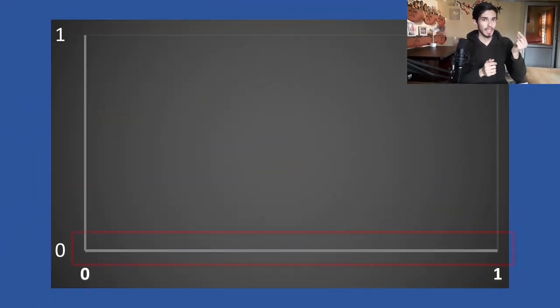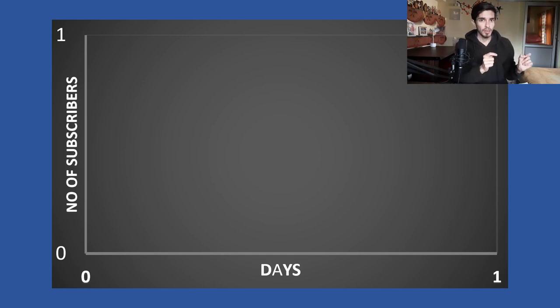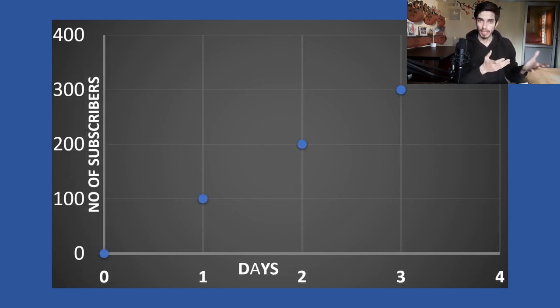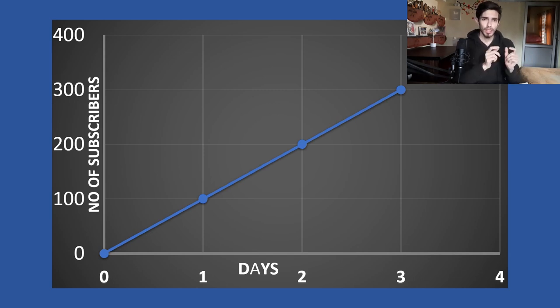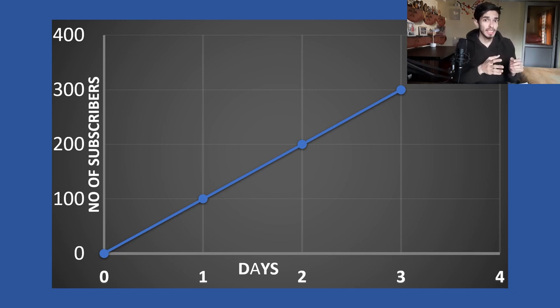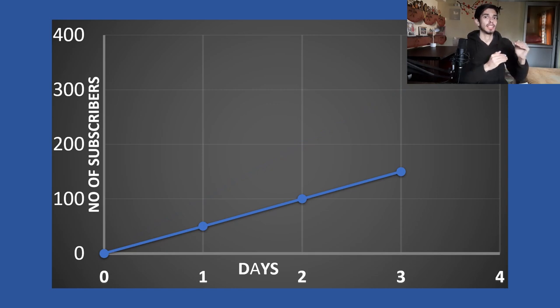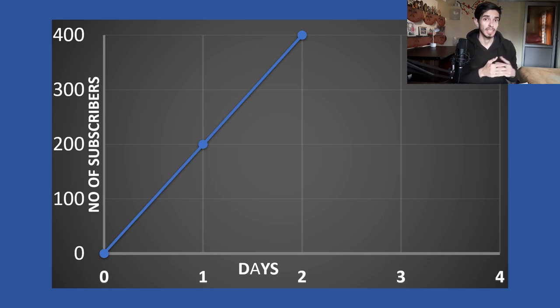Look at this graph. The x-axis represents day 1, day 2, day 3, and so on — which is time. And the y-axis represents the number of subscribers of a random YouTube channel. On day 1, the channel gets 100 subscribers. On day 2, it gets to 200 subscribers, and so on. If we connect these dots, it creates a straight line. Now, what information from this graph tells us how fast the subscribers are increasing? It is the orientation of this line. If this line is more parallel to the x-axis, the subscribers are increasing slowly. And if it's more parallel to the y-axis, the subscribers are increasing faster.